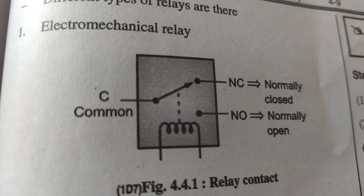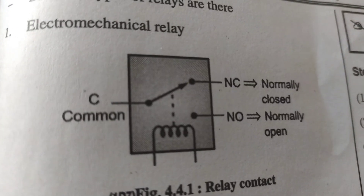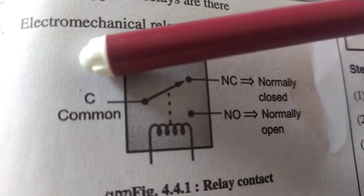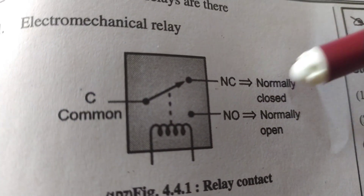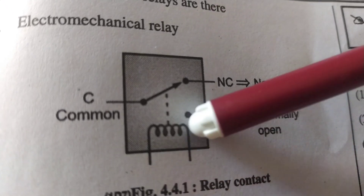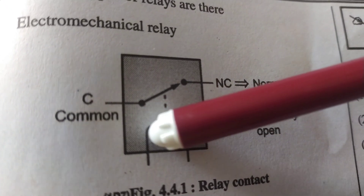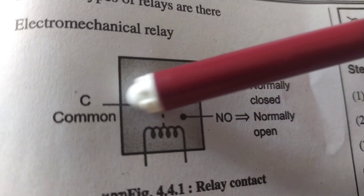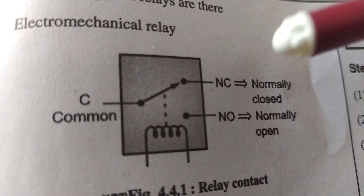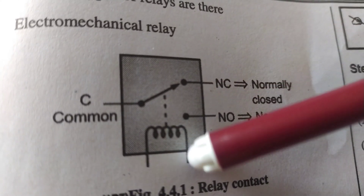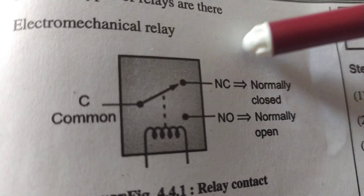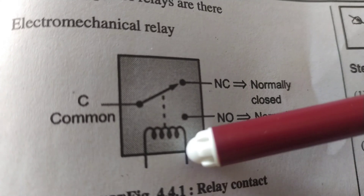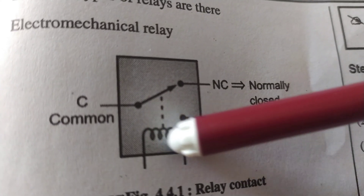We will look at the electromechanical relay. It has a total of five pins. There is one common pin, a normally closed (NC) contact, and a normally open (NO) contact. Whenever current flows through the coil, the coil is energized and the pole attracts, connecting the common to NO. In the rest condition with no current, the connection is between common and NC.